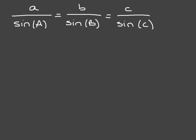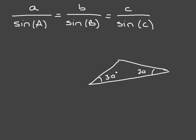Let's say we're given this triangle, and we're given this interior angle of 30 degrees, this interior angle of 20 degrees, this side length is 8, and we're looking for this side length X.